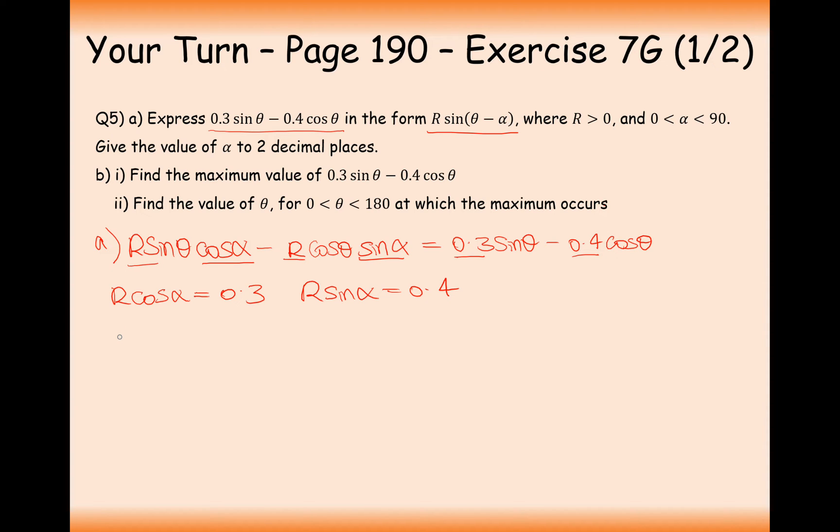What we're going to do now is work out R first. R is calculated by Pythagoras, which equals 0.5. All that's left is to work out alpha. Substitute it into one of the equations: 0.5 cos alpha equals 0.3. Divide through by 0.5, and we get 3 fifths. Therefore, alpha equals, and we want it in degrees mode, so make sure your calculator is in degrees mode. Your alpha angle needs to be between 0 to 90. Cos minus 1, 3 over 5 is 53.1. Therefore, 0.3 sine theta minus 0.4 cos theta equals 0.5 sine theta minus 53.1.